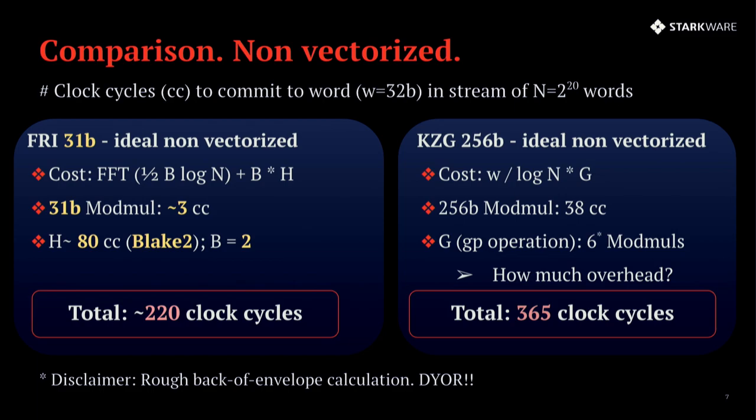On the other hand, if you look at something like 31 bit FRI, you'll see that you pay for the FFT roughly one half of the blowup factor times the logarithm times 20. In our case, the blowup factor is going to be two. So half times two times 20 equals 10. And that's the number of clock cycles per word plus blowup factor times hash. So if you use something like Blake, that's going to be 80 clock cycles. You see the most dominating factor here is going to be the hashes and you have to pay two of them. So out of the 220 cycles, 160 belong to the hashing.